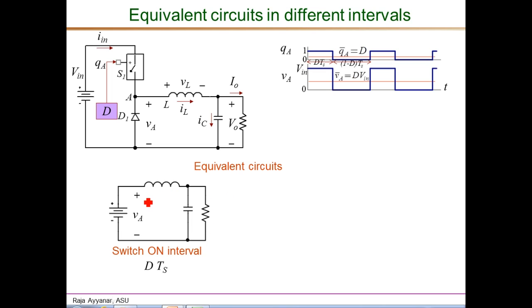For example, we can draw the waveform of V_A immediately by looking at this equivalent circuit. It is exactly equal to V_IN. Similarly, the waveform for V_L, which is defined plus and minus as shown, in this interval would be V_IN minus V_O. This end is V_IN and this end is V_O, so V_L is V_IN minus V_O. This equivalent circuit is valid only for the duration D times T_s.